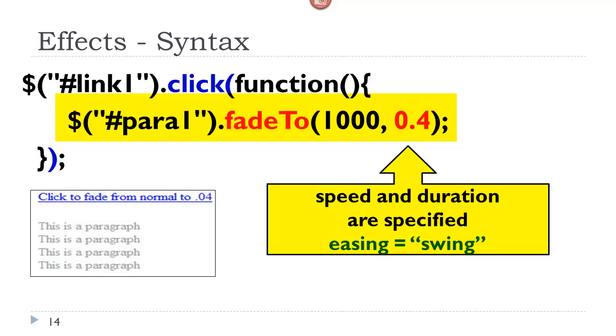And here we have an example, and if you see on the left, you see where we clicked, and we took it down to an opacity of .4. Excuse me, that's a typo, it should be .4, not .04.